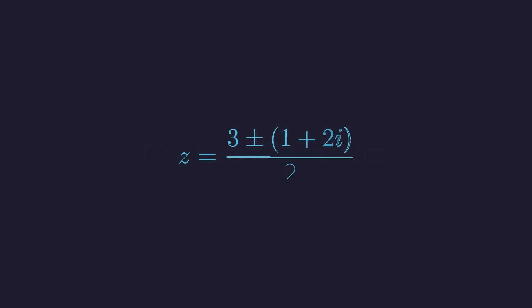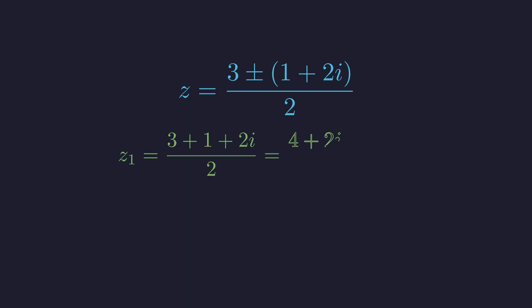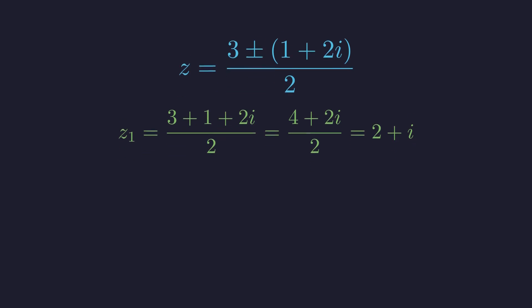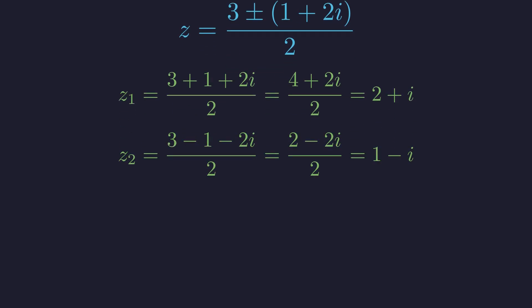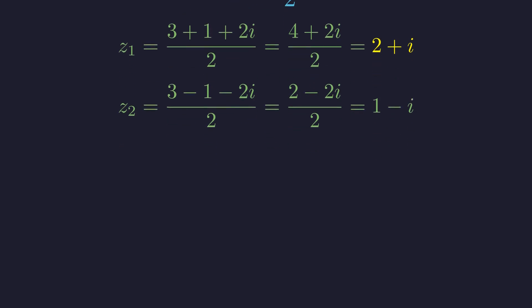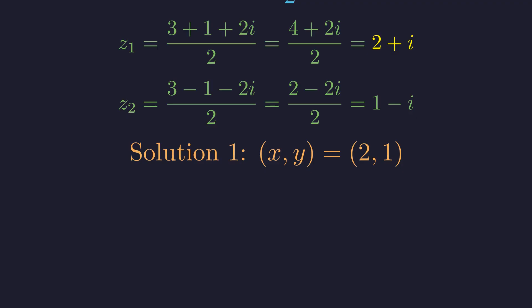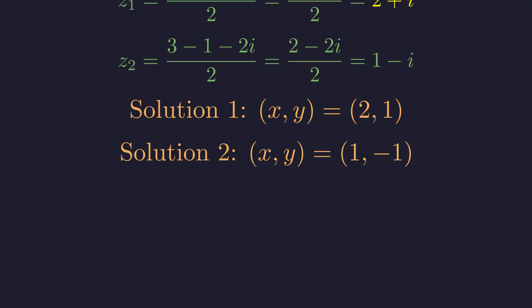Now we can complete our solution. z equals 3 plus or minus the quantity 1 plus 2i, all divided by 2. This gives two solutions: z₁ equals 4 plus 2i over 2, which equals 2 plus i, and z₂ equals 2 minus 2i over 2, which equals 1 minus i. Recalling that z equals x plus iy: from z equals 2 plus i we get x equals 2 and y equals 1; from z equals 1 minus i we get x equals 1 and y equals negative 1.